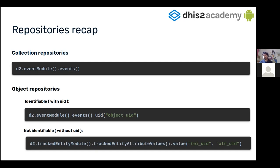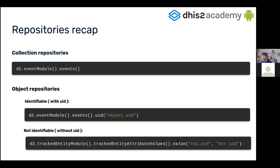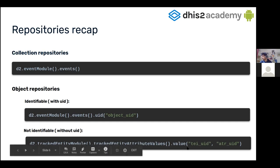Then we have the object repositories. The collection repositories represent the collection of objects; the object repositories represent a single object. These are different for identifiable objects — the ones that have a UID — and for non-identifiable objects. For identifiable objects, you use the UID method in the collection repository. For non-identifiable ones, you call the value method and pass the properties that make this value or object unique.